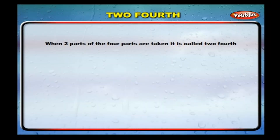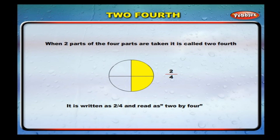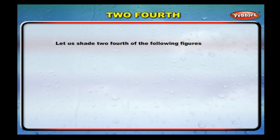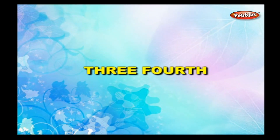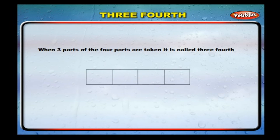Two-fourths: when two parts of the four parts are taken, it is called two-fourths. It is written as 2/4 and read as two by four. Let us shade two-fourths of the following figures: shade two of the four parts of this square, shade two of the four parts of this triangle, shade two of the four parts of this rectangle.